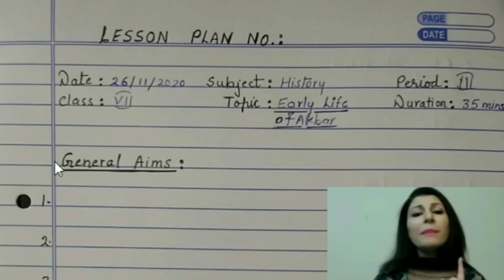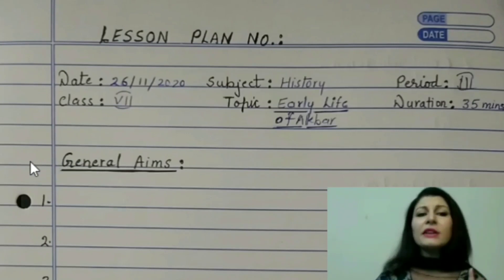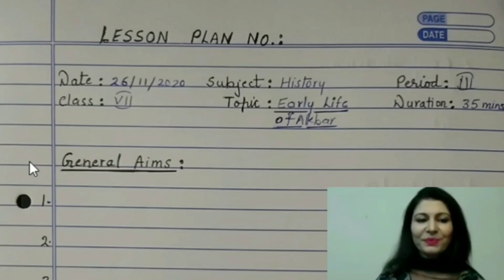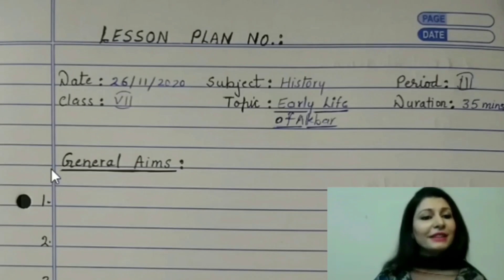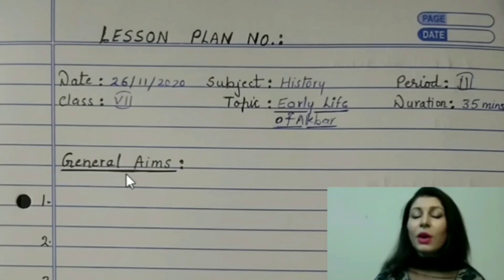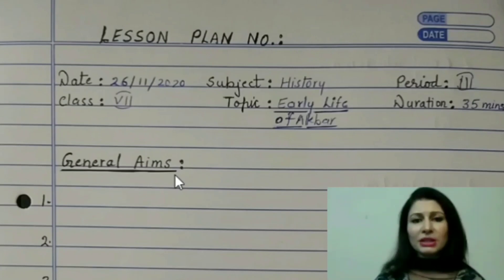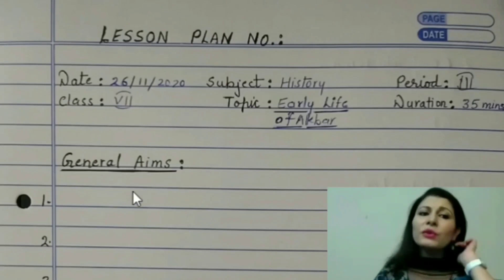Let me tell you that there are many ways of making a lesson plan, so if you find a different format then don't think that this one is wrong. Then the first heading would be general aims. All the subjects have their individual general aims of teaching which you can find on the net or in the books of teaching methodology of that particular subject. You have to write around six to seven aims over here.